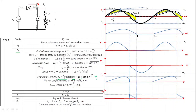From an exam point of view, you must know three key points about the output current. First, we get output current up to β. Second, β lies between π and 2π. Third, the maximum value of the output current occurs between π/2 and π. So the maximum output current lies between π/2 and π, and β lies between π and 2π.